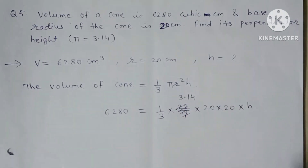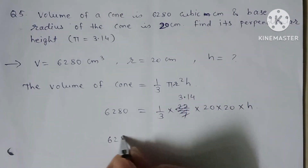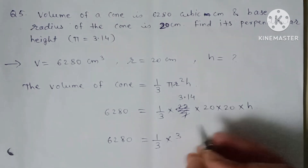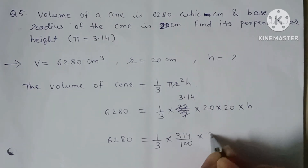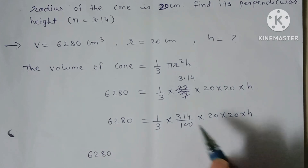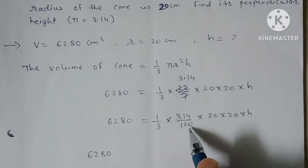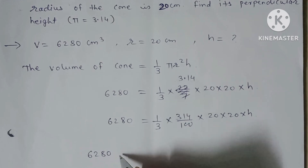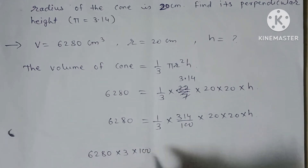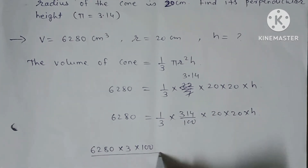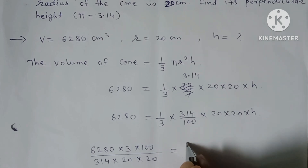Substituting π = 3.14 = 314/100: 6280 = (1/3) × (314/100) × 20 × 20 × h. Moving 1/3, 314/100, and 20 × 20 to the other side: h = (6280 × 3 × 100) / (314 × 20 × 20). Cancelling zeros and simplifying: 314 cancels with 6280 leaving 20, and the 20s cancel further, giving h = (20 × 3) / (2 × 2) = 60/4 = 15 cm.